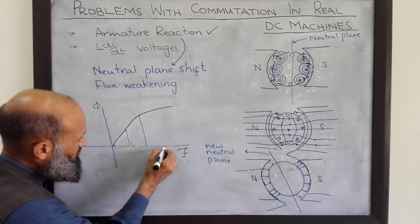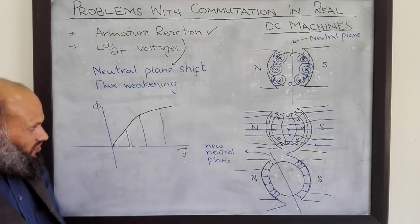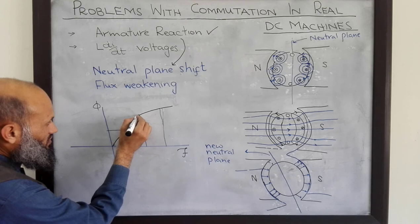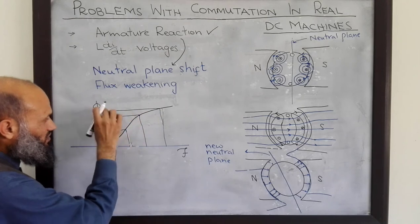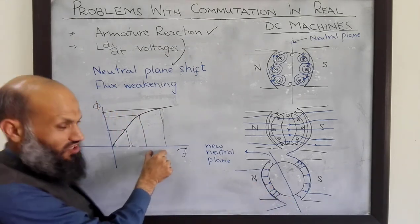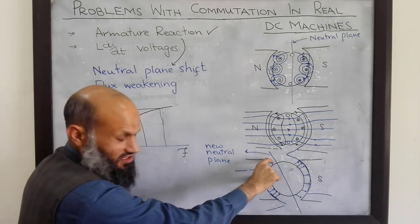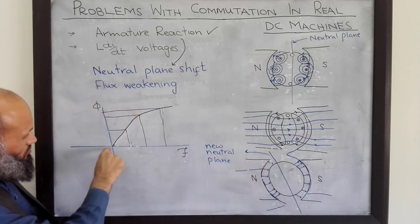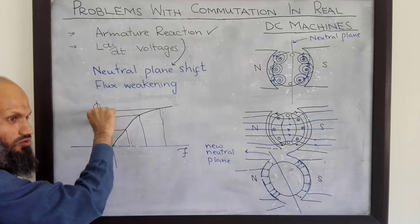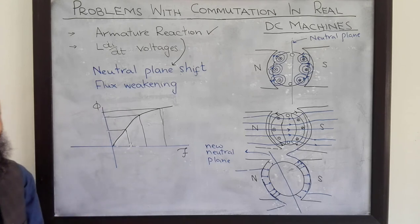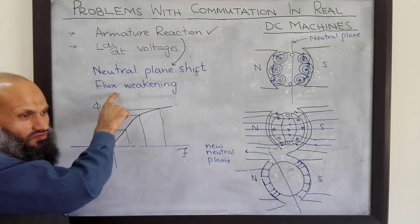Machines are generally designed to work at the knee of the curve, which gives maximum flux corresponding to MMF. At one end, MMF has decreased, so flux there has decreased. At the other end of the pole, MMF has increased by the same amount. However, due to saturation in this curve, the decrease in flux is much more than the increase in flux at the other end. Therefore, the net flux in the machine will decrease, and this effect is called flux weakening.